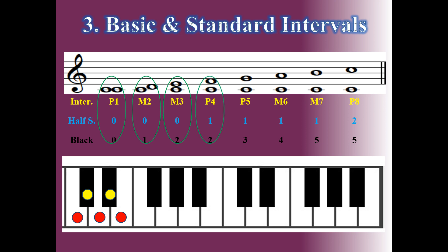From DO to FA: DO, RE, MI, and FA — four white keys and two black keys. This is the perfect fourth. The perfect fourth has one half step. Between DO and FA there is one half step: MI to FA is a half step, because between MI and FA there is no black key.